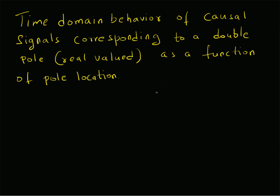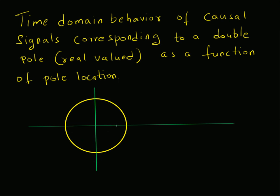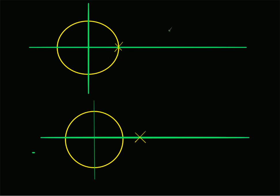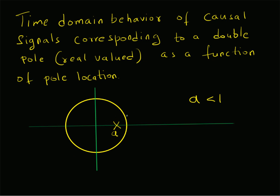We are going to look at what is the influence of the location of the poles on the behavior of the signals in the time domain. Consider this circle as the unit circle. We have a pole at value a, where a can be less than one, equal to one, or greater than one. So there are three possible locations for the poles: inside the unit circle (|a| < 1), on the unit circle (a = 1), or outside the unit circle (a > 1).